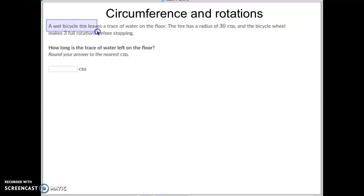A wet bicycle tire leaves a trace of water on the floor. Ooh, scary. The tire has a radius of 30 centimeters and the bike wheel makes three full rotations before stopping. So let's figure this out.